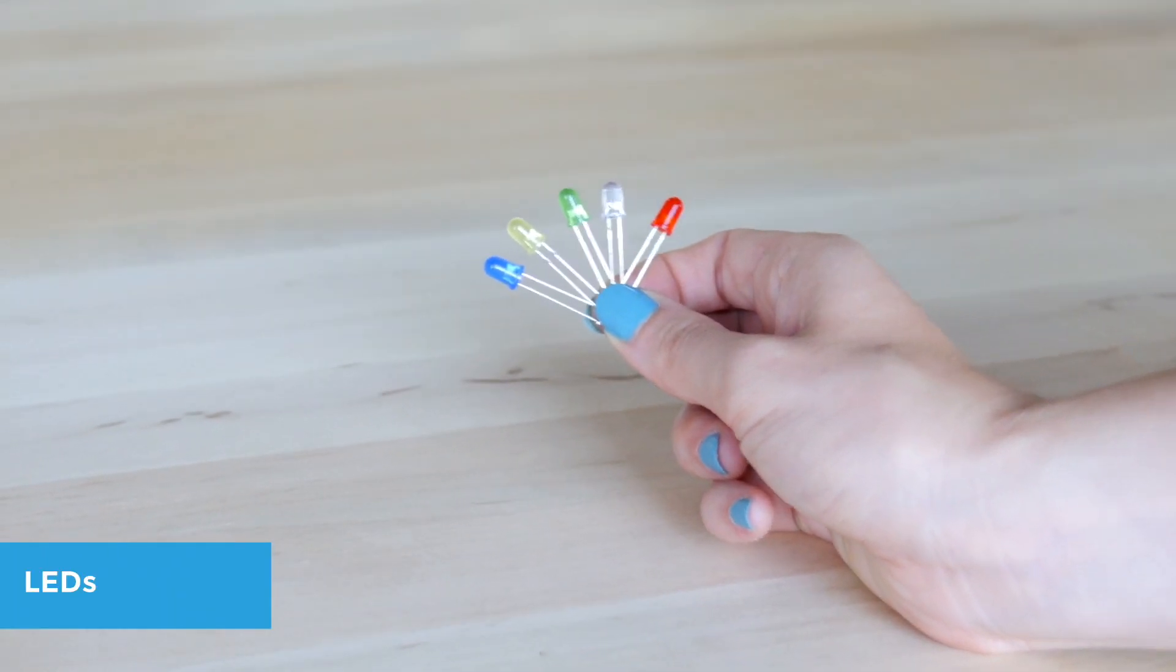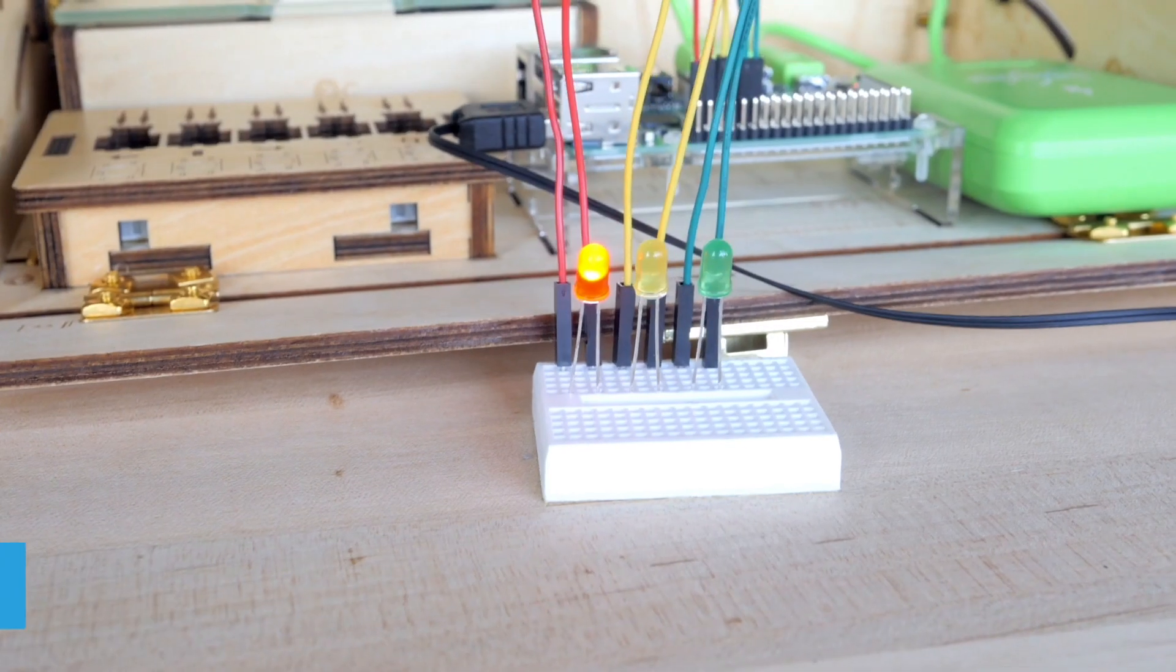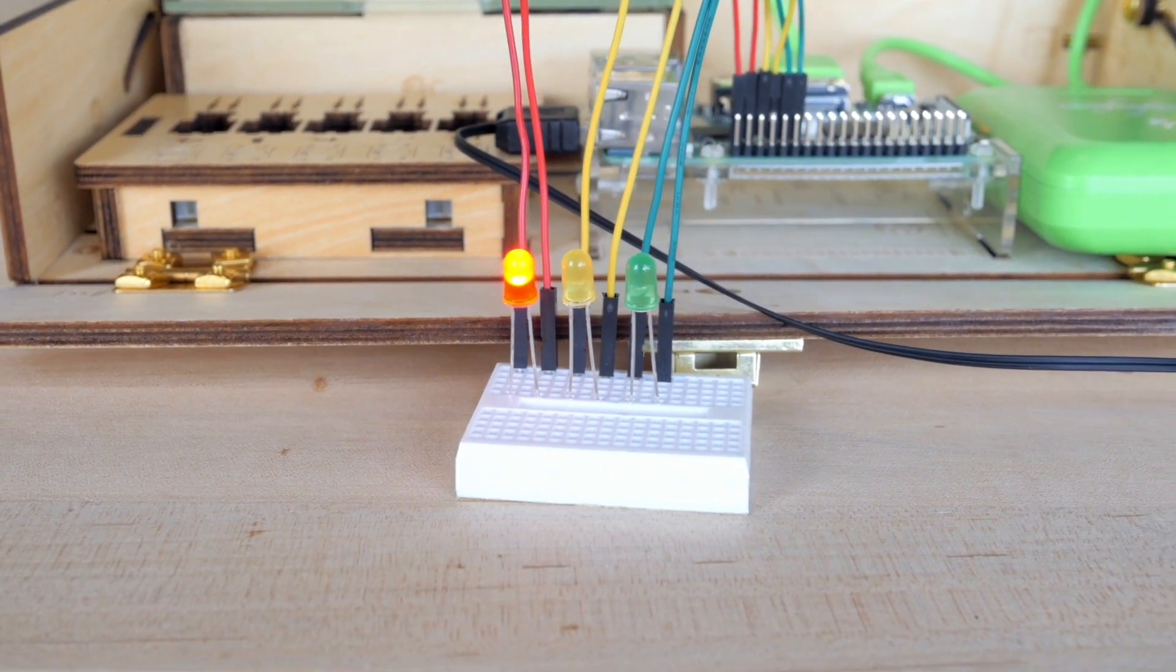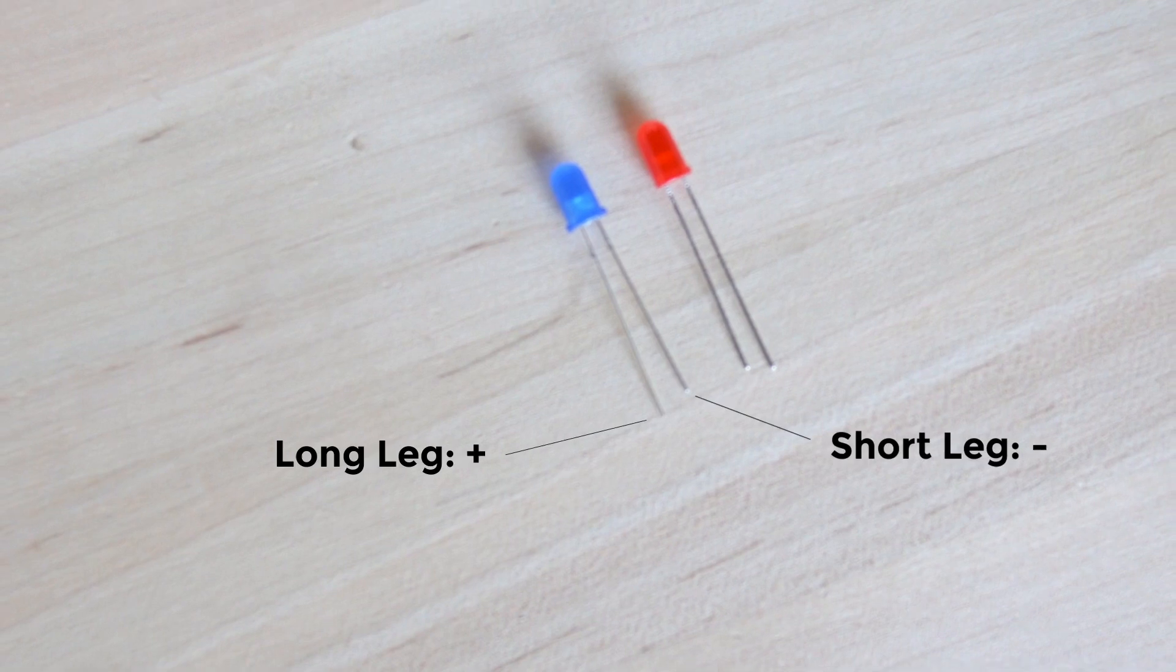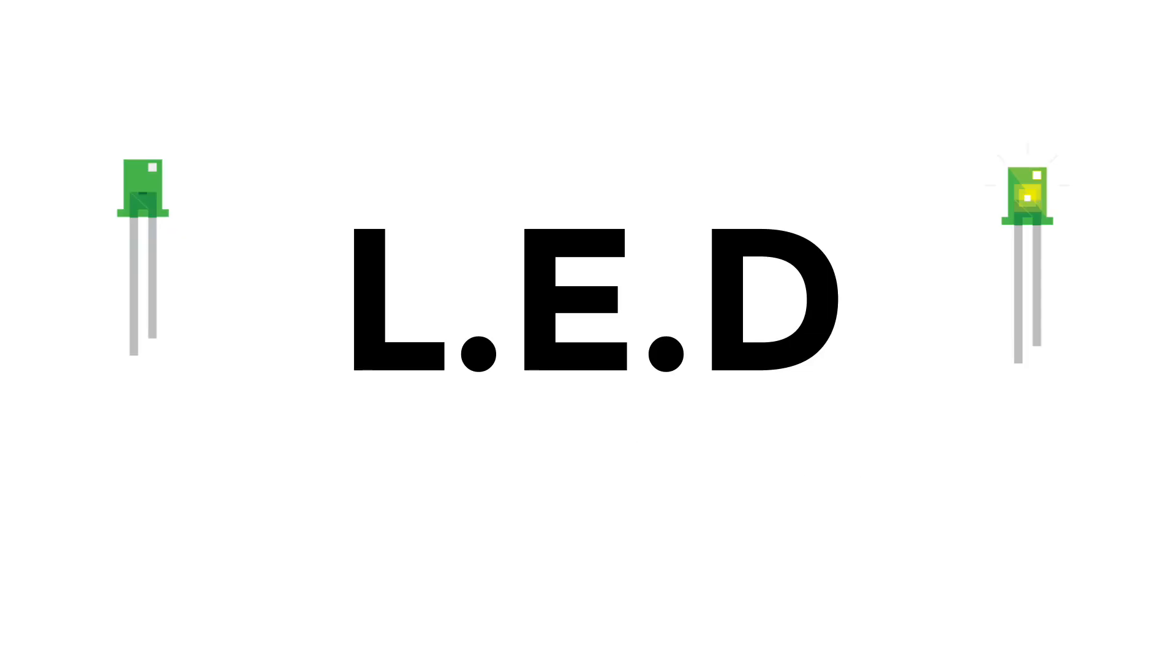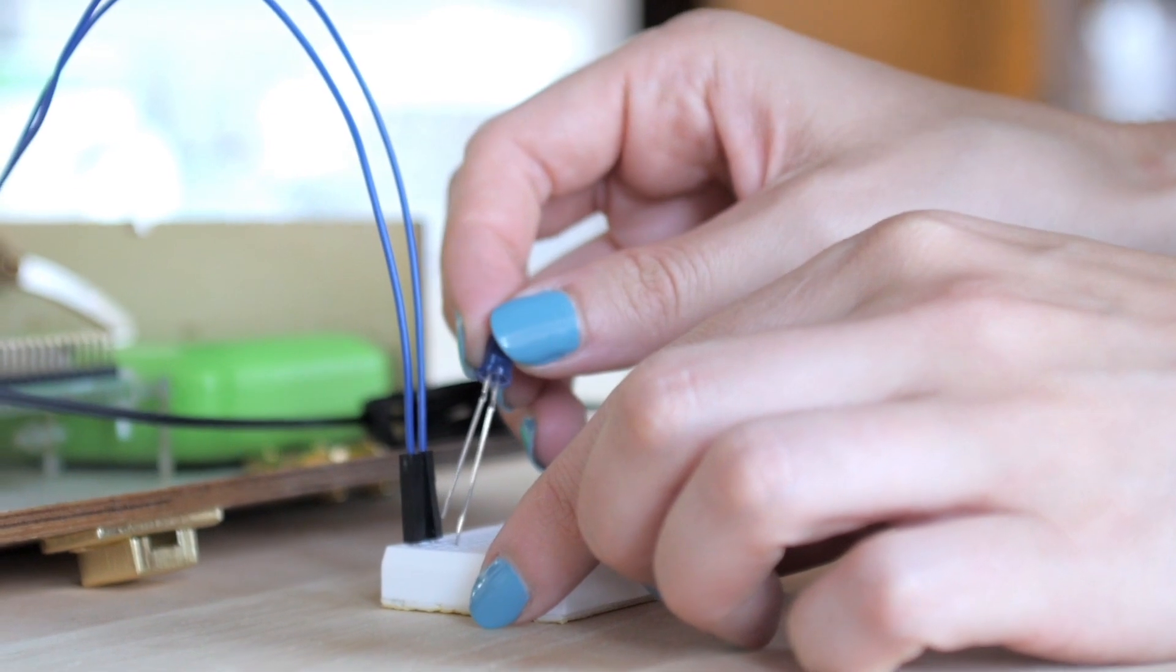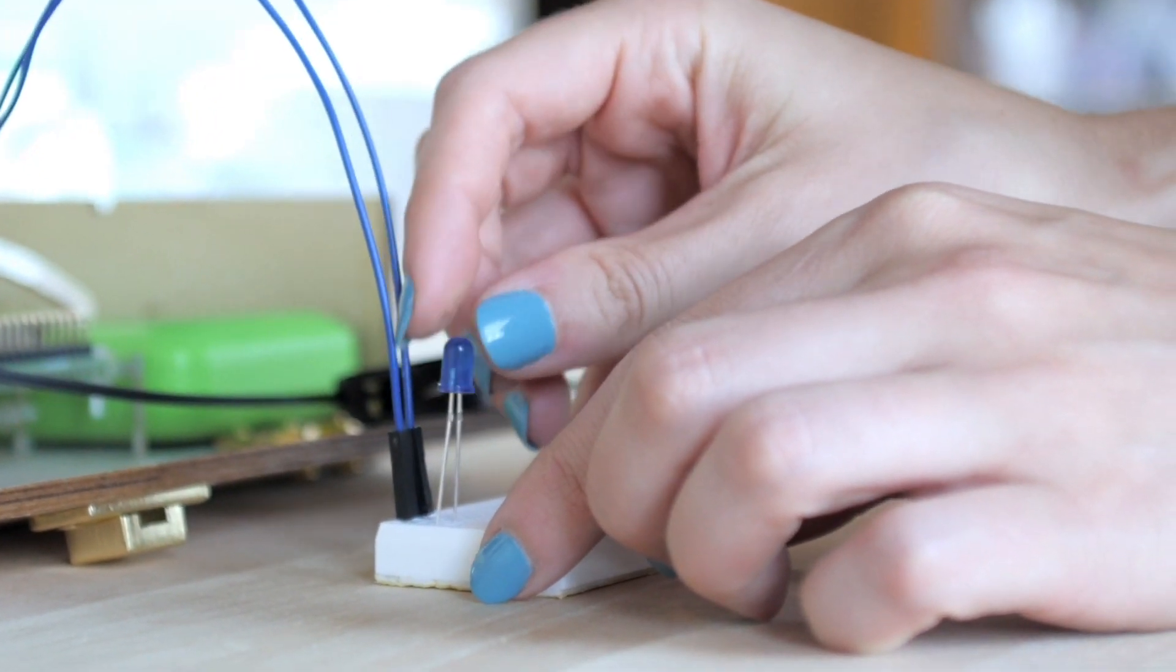LEDs. You have five different colored LEDs. These are small light bulbs used in electronics. You'll notice that the LED has two different sized legs. This is because LED stands for light emitting diode. They are unidirectional. You must plug in the longer leg into the positive end of the circuit and the shorter leg into the negative side.